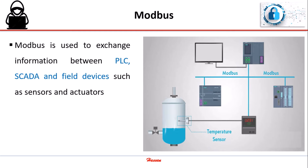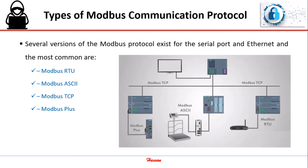Modbus is used to exchange information between PLC, SCADA, and field devices such as sensors and actuators. Several versions of the Modbus protocol exist for the serial port and Ethernet. The most common are Modbus RTU, Modbus TCP, and Modbus Plus.